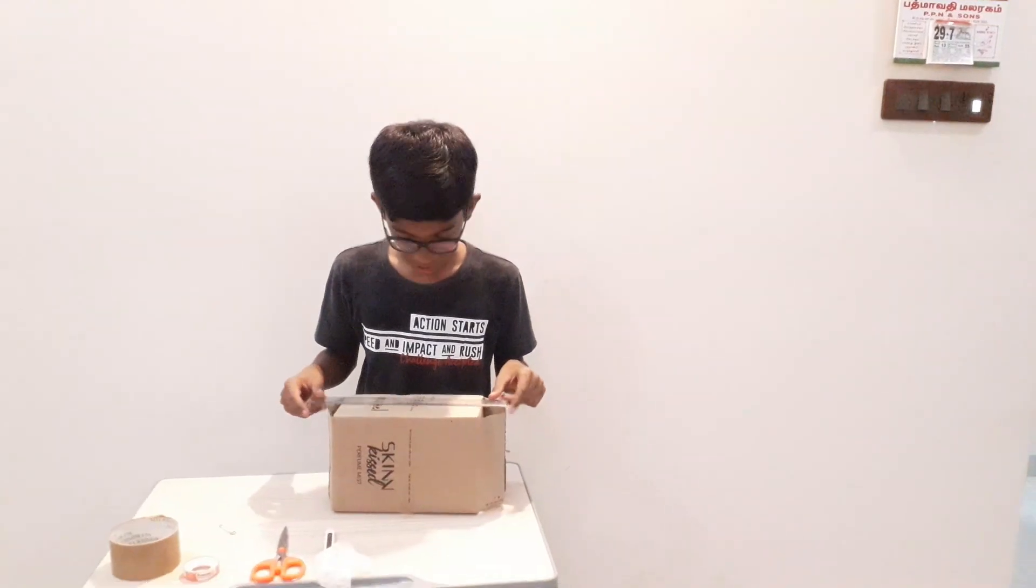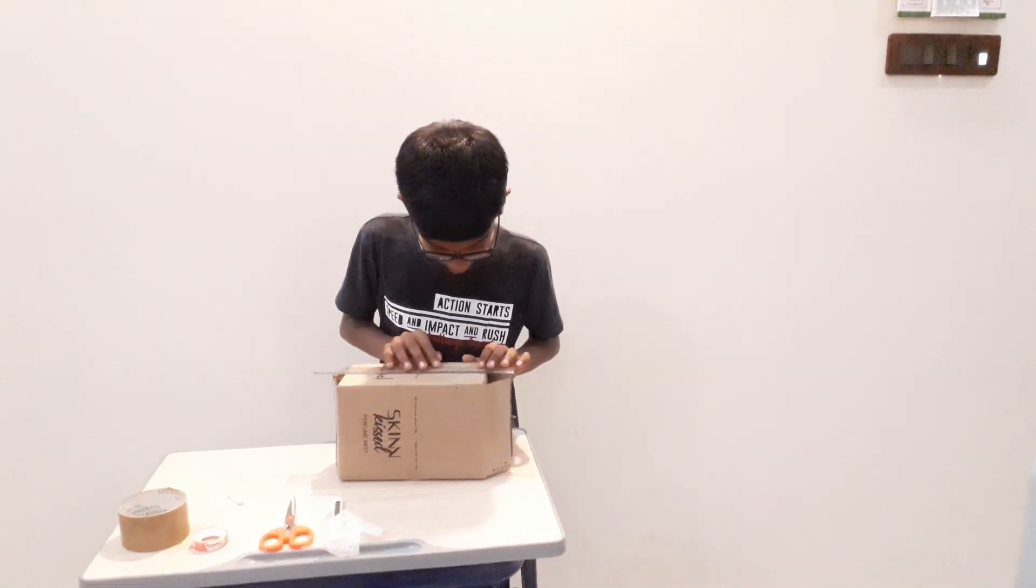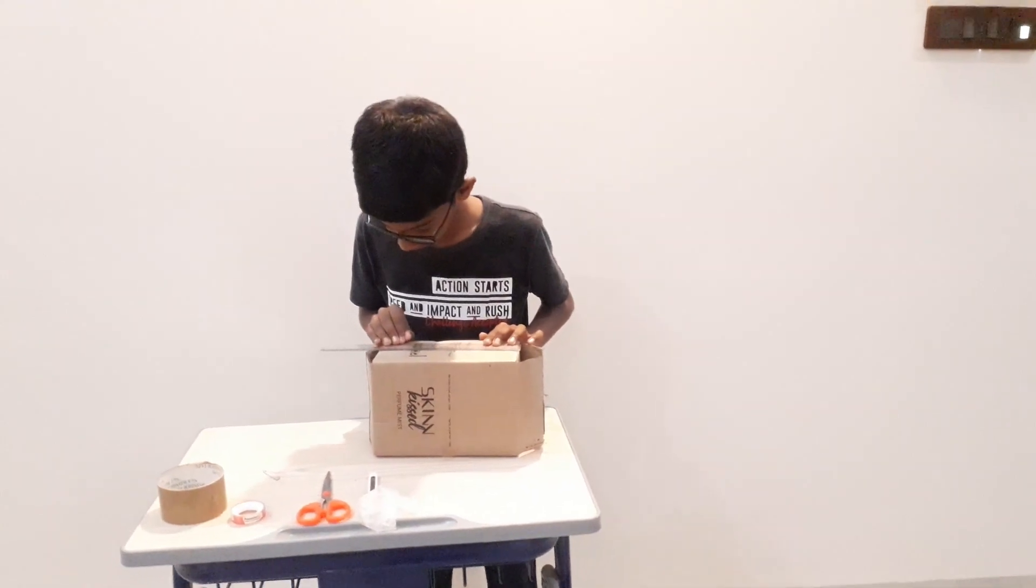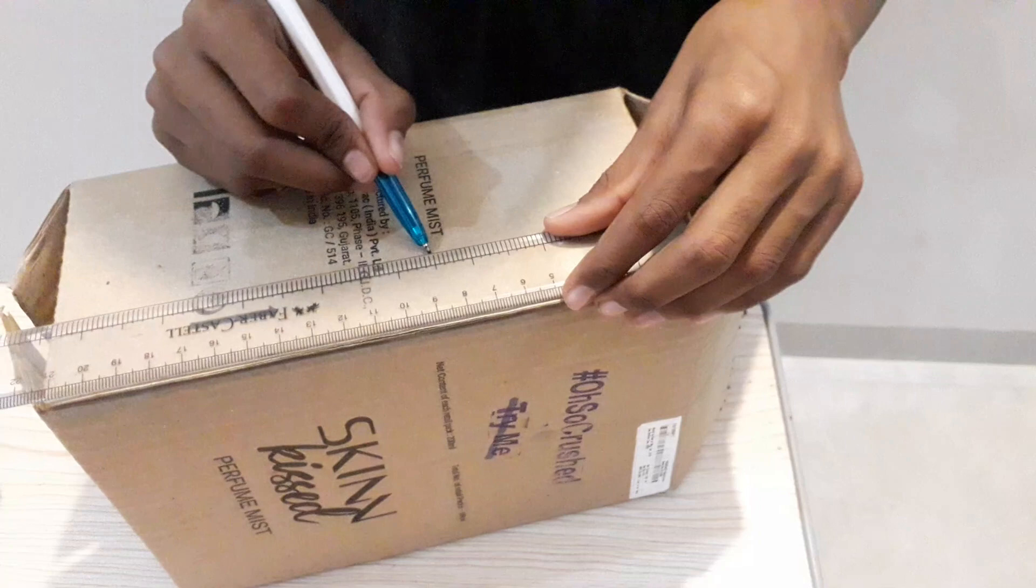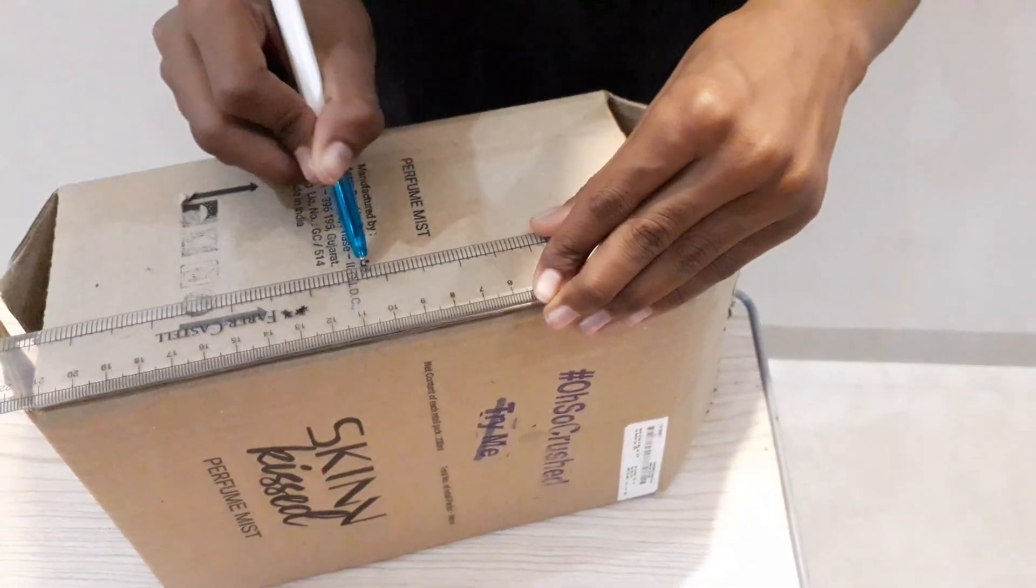Place it over in the cardboard box. Mark a point exactly on its center. Make a hole like this. Now make a bigger square in the opposite side of the smaller hole.